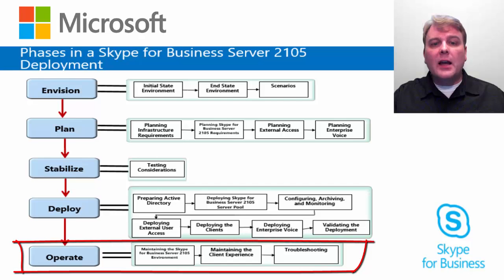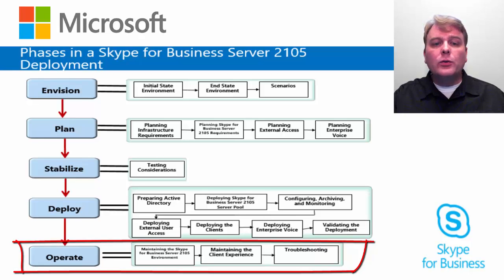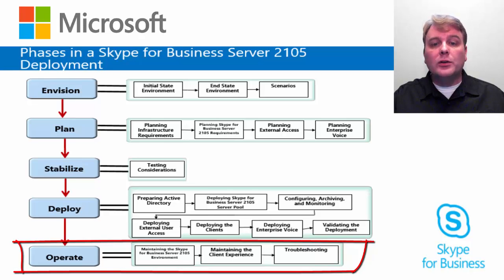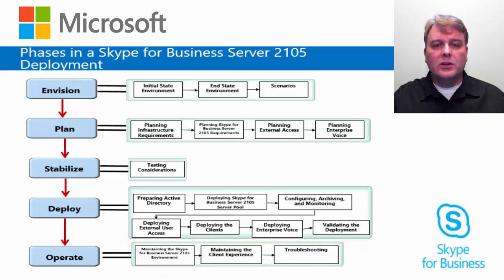Lastly is the operation phase. You do not usually plan for operations during planning. However, identifying new operational procedures or changing existing operational procedures is an important part of the planning phase. If you identify these operational procedures during planning, your implementation will be successful, because all stakeholders will have the required documentation ready, and this helps smooth transition.